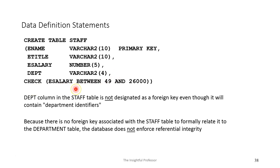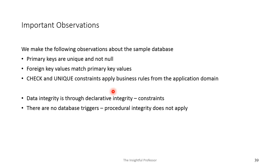There is one integrity constraint here: the salary of a staff member must fall between $49,000 and $46,000. That's a constraint applied to this particular table. To summarize: primary keys are unique and not null; foreign keys have to match primary keys; and we also have check and unique constraints which serve to apply business rules from the application domain. We're using constraints as part of the data definition statements, so this is referred to as declarative integrity. This particular database currently has no database triggers, which means procedural integrity does not apply, at least at the moment.